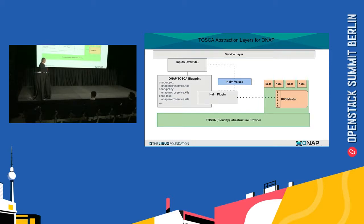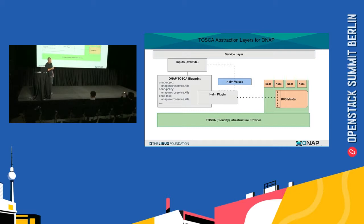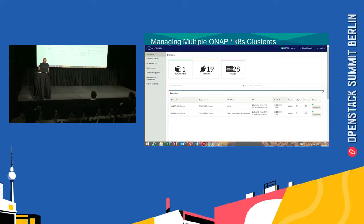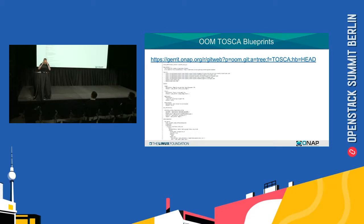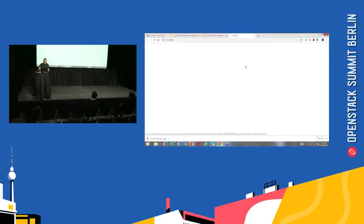How do we do this? We have a TOSCA infrastructure provider that knows how to start a Kubernetes cluster. If we focus on Helm, we can have a Helm blueprint where each one of the nodes is an ONAP microservice Kubernetes node. We have a Helm plugin integration that knows to talk to the Tiller server and provision the workload on that cluster. You just need to point to that cluster and provision the workload. This is what we did for ONAP, but it's generically available. You can see that we have multiple ONAP clusters, and we can go directly to the blueprint itself.